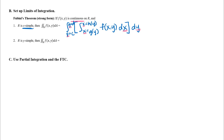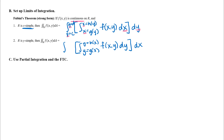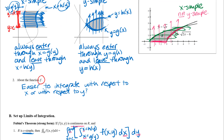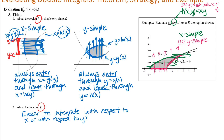For a y-simple region, the inner integral is in terms of y, going from y equals g of x to y equals h of x — the curves where you enter and leave. The outer integral has dx as its differential, with the shadow projected down onto the x-axis giving the constant limits from x equals a to x equals b.